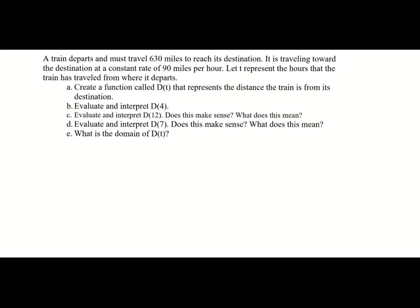Next, we have a train that departs and must travel 630 miles to reach its destination. It's traveling at a constant rate of 90 miles per hour. Let T represent the hours the train has traveled from where it departs. We need to create a function D of T that represents the distance the train is from its destination.